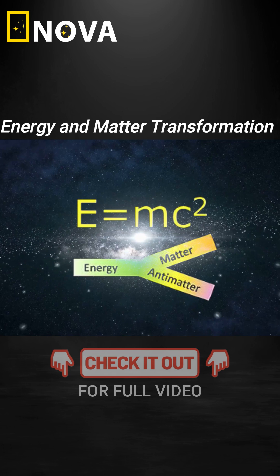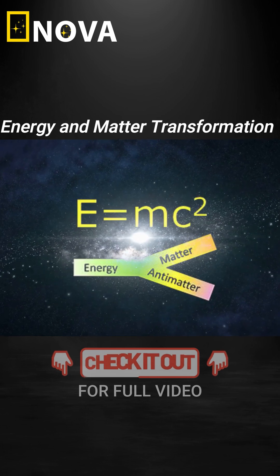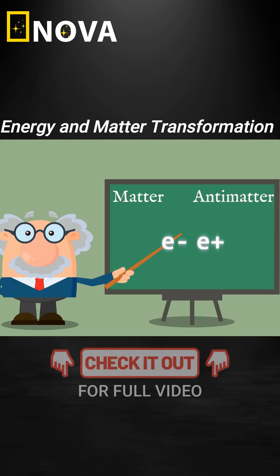However, there's a twist. Along with matter, the Big Bang also created its opposite, antimatter. When matter and antimatter meet, they annihilate each other, converting back into energy.